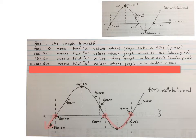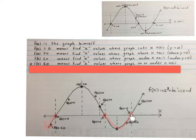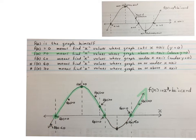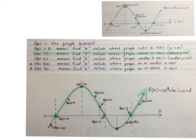Something extra: if they say where is f(x) smaller than or equal to zero, it means find the x values where the graph is on or under the x-axis — so it's everywhere where you see the red, including those points. If they ask where is f(x) bigger than or equal to zero, it means find the x values where the graph is on or above the x-axis, everywhere where you see the green line, including those three points. Please stop the video and read through this and try to understand what is exactly meant by each one of these notations.